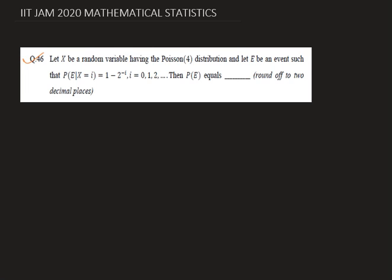A random variable X is having distribution Poisson with parameter lambda equals to 4. Now we have to define our event E such that probability of E given X equals to i is 1 minus 2 to the power minus i for all i = 0, 1, 2, and so on. Now we have to find the probability of E.